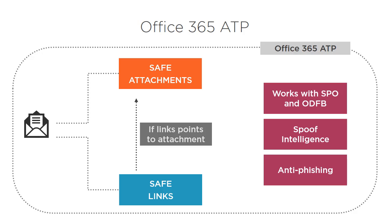Office 365 ATP is a must-have feature for any enterprise using Office 365 and worried about security. It is part of the Office 365 E5 licenses or can be purchased separately. You do not even need to do complex configuration to make all this magic happen. It is simple to configure and the business benefits are definitely high.